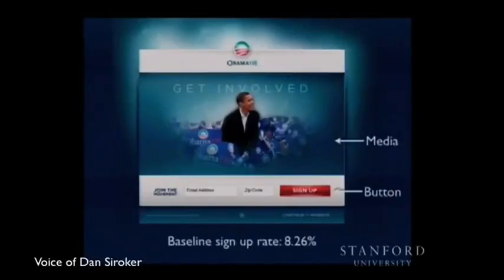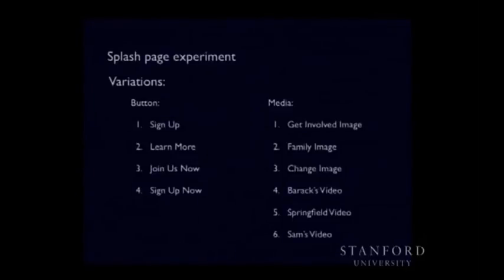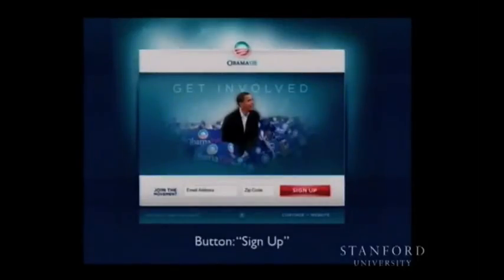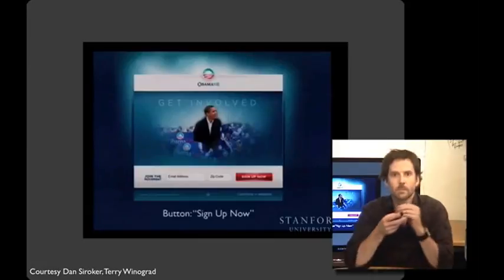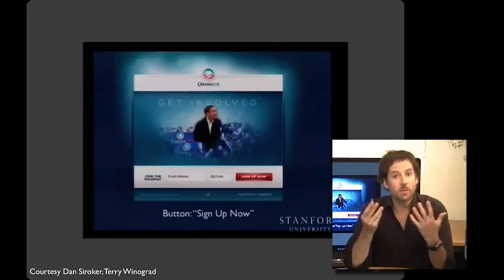So here's an experiment we did. We did a multivariate test — which is just a complicated way of describing trying variations of two different parts of the page. We tried different kinds of media for the top part of the page, and we tried different kinds of buttons. Our baseline sign-up rate was 8.26%. We had four different buttons: 'Sign up,' 'Learn more,' 'Join us now,' and 'Sign up now,' and six different media: three images and three videos. The only thing changing between button variants is the text, and what they're using as a dependent variable is how many people click that button.